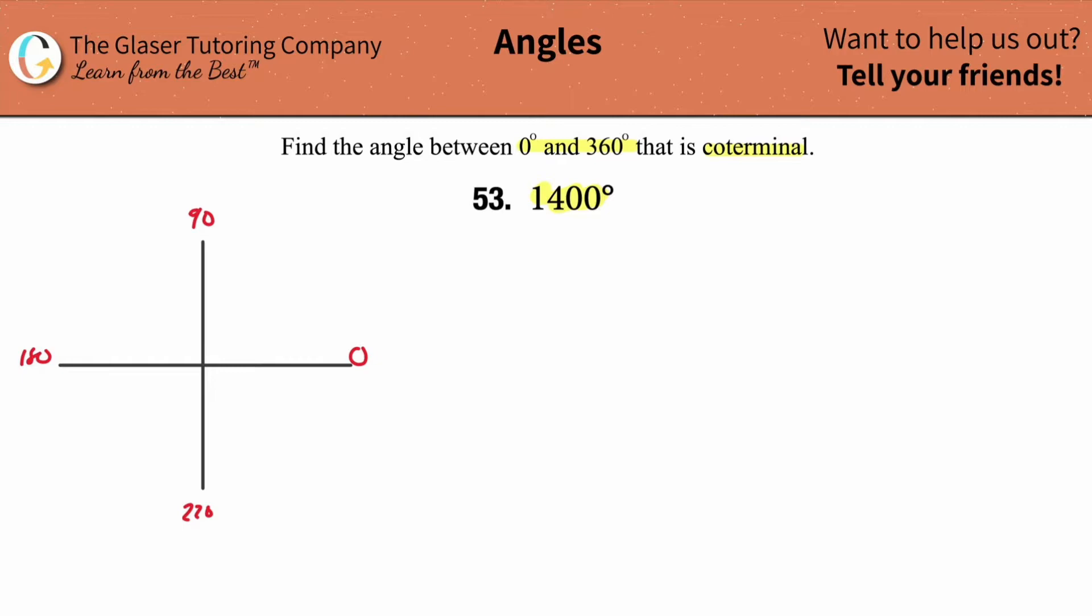Now 1400 is a lot to be thinking about. How many times are we going to go around? We can, but there's an easier way, I think. What we can do is we can take this 1400 and we can divide it by the degrees inside of a full circle, 360.